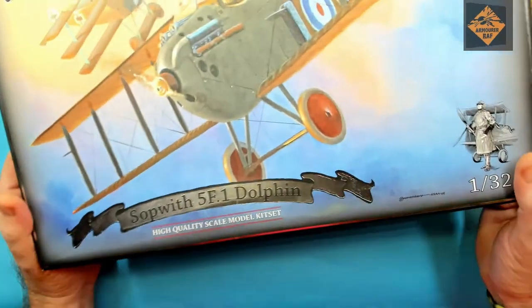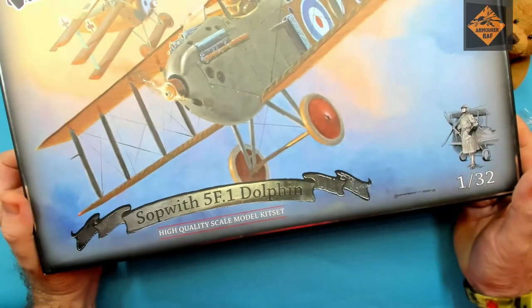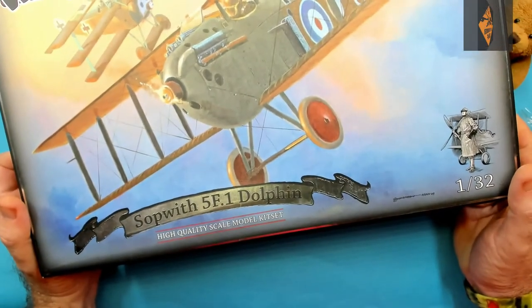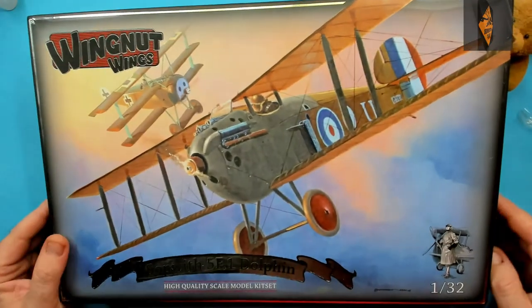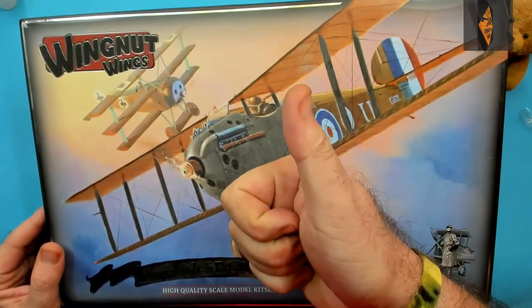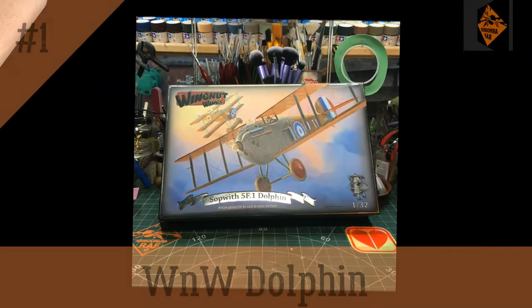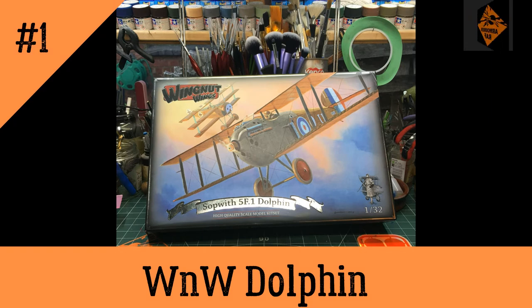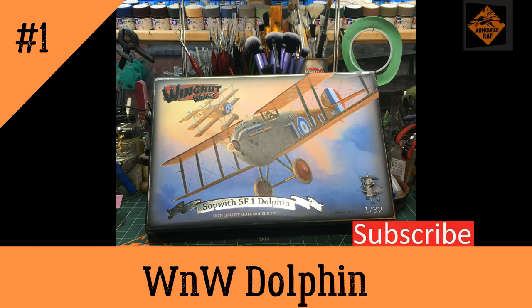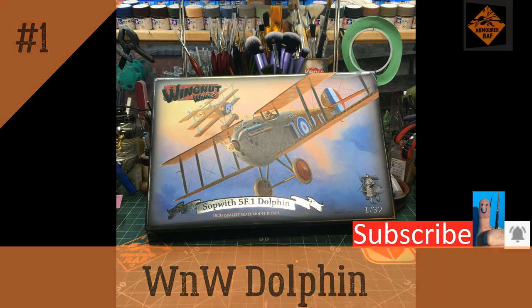So there you have it, the Sopwith 5F.1 Dolphin from Wingnut Wings in 1:32 scale. Let's crack on. That's my new build, Wingnut Wings Dolphin, which I am really looking forward to. So come back for episode 2 when I start building this little tinker. Remember if you like what you see please subscribe to my channel, help it grow, get the message out there to as many modelers as possible. Like the video and ring my bell. Remember stay safe, keep on modeling.